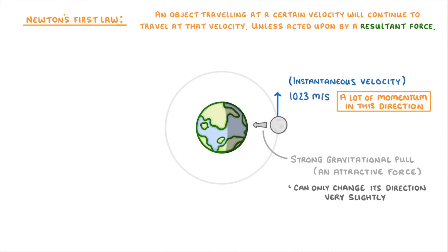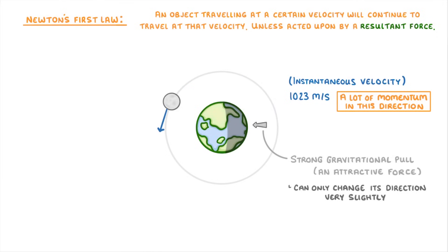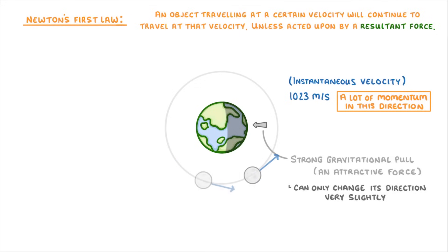As the Earth is always applying this gravitational force, it's always changing the Moon's direction. So in practice, this means that the Moon is basically always orbiting around the Earth.